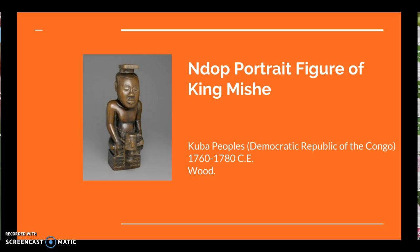Hey bloggers! This is Andrew coming at you with two pieces of art today. First, we'll be looking at the Ndop portrait of King Mishe. It was made in the Democratic Republic of the Congo out of wood between 1760 and 1780 CE.